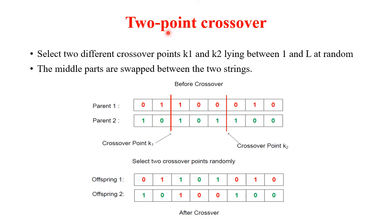Offspring 2 has the first two bits from parent 2 and the remaining bits from parent 1. In two-point crossover, two crossover points K1 and K2 are required, both lying between 1 and L. The middle parts are swapped between the two strings. For example, offspring 1 has the first part from parent 1, the middle part from parent 2, and the last part from parent 1.